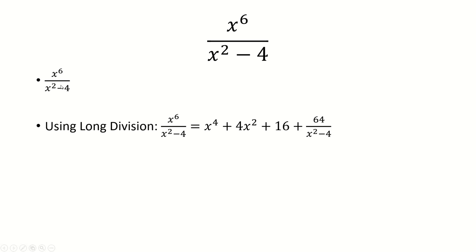So when we do long division, we end up with x to the 4th plus 4x squared plus 16 plus 64 over x squared minus 4.